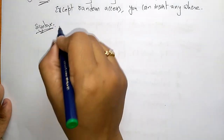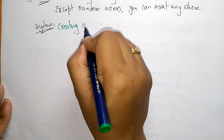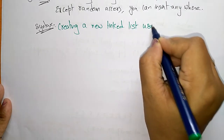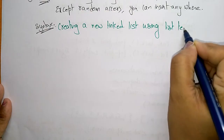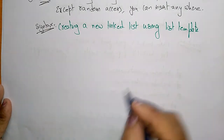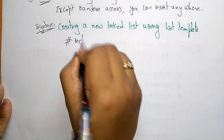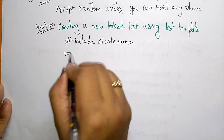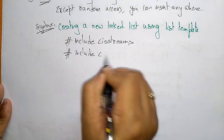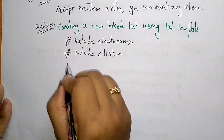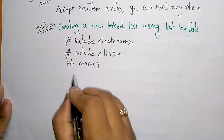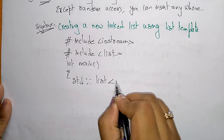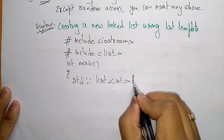Let's look at the syntax for creating a new linked list using the list template. Include iostream and also include the list library function so that you can access list in the program. Then in main, write: std::list<int> l;